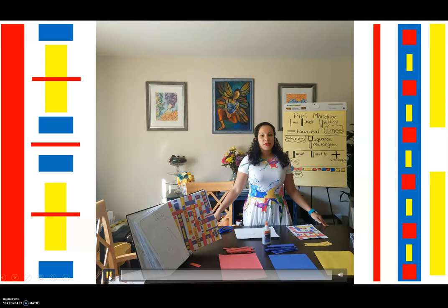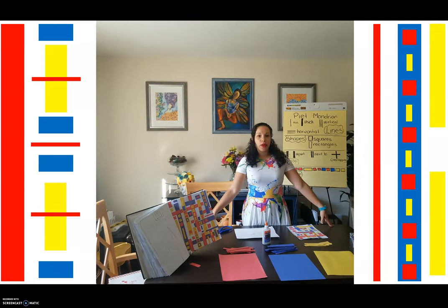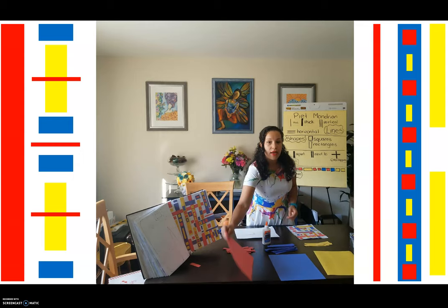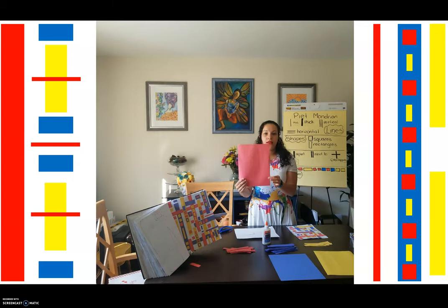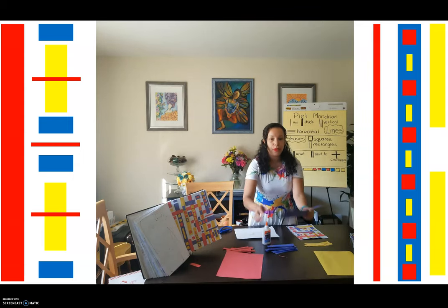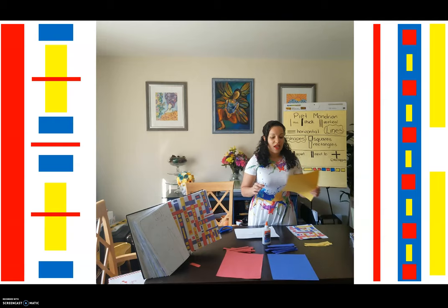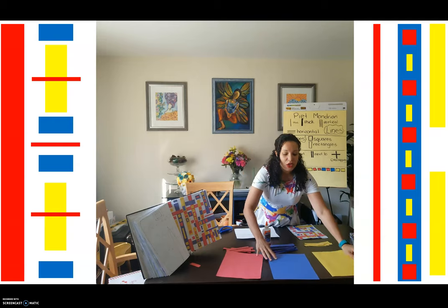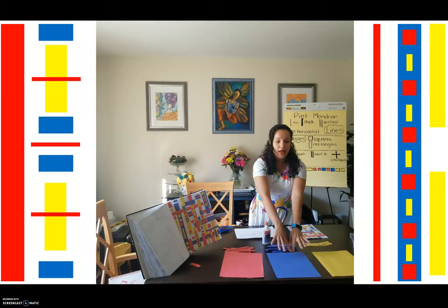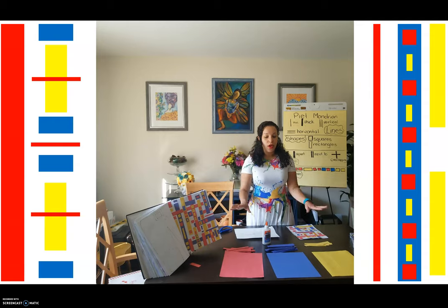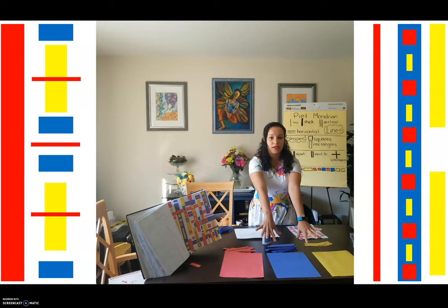Hi, this is Ms. Campos and today we're going to be looking at primary colors. What are primary colors? Primary colors are red, blue, and yellow. You can mix primary colors to make secondary colors — we'll talk more about that when we discuss secondary colors — but no colors can mix together to make these colors.